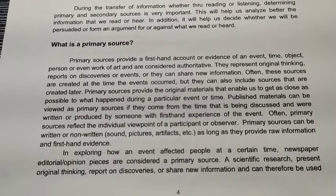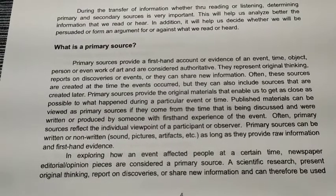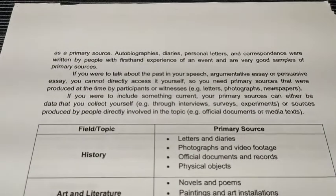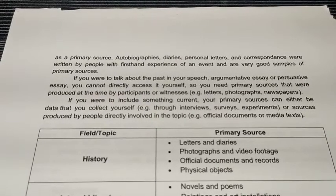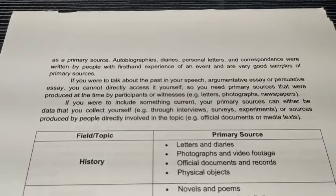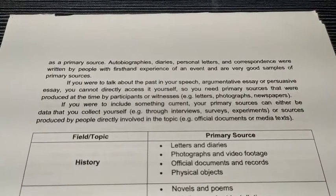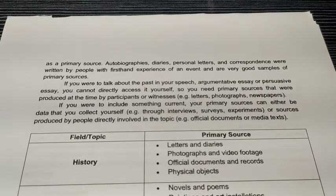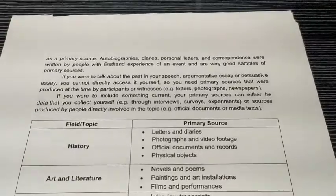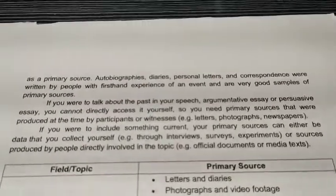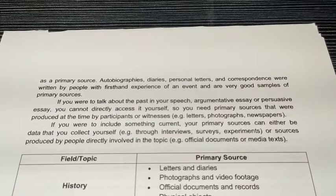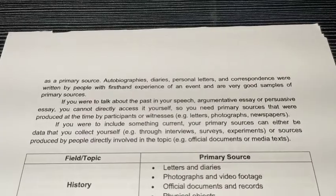A scientific research presents original thinking, reports on discoveries, or shares new information and can therefore be used as a primary source. Autobiographies, diaries, personal letters, and correspondence written by people with first-hand experience of an event are very good examples of primary sources. If you were to talk about the past in a speech, argumentative essay, or persuasive essay, you need primary sources produced at the time by participants or witnesses — such as letters, photographs, or newspapers. If you include something current, your primary sources can be data you collect yourself through interviews, surveys, or experiments, or sources produced by people directly involved in the topic.